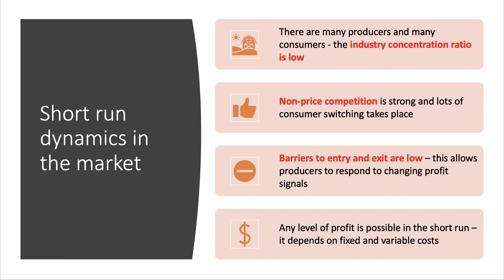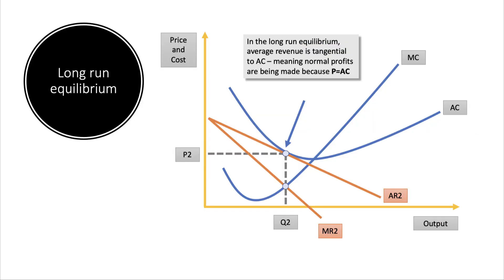The long-run diagram is often a tricky one to draw. You need to show that the firm is in equilibrium — in this case at output Q2, charging a price P2 — but that price is just tangential to, just touching, the average cost curve. What happens is that new firms come into the market, which drives down the demand for existing products. Assuming a fairly static total market demand, the demand curve will shift to the left until it's just tangential to the average cost curve.